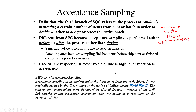Acceptance sampling is a technique that appeared after 1940, after the Second World War. The US military introduced it to test bullets because they were producing millions of bullets and it was very difficult and time-consuming to check each one, while military personnel urgently needed bullets. The concept and methodology were developed by Harold Dodge, a veteran of Bell Laboratories' quality assurance department, who was acting as a consultant to the Secretary of War.